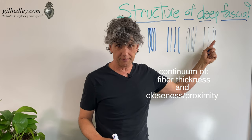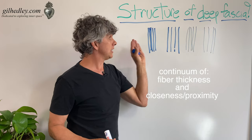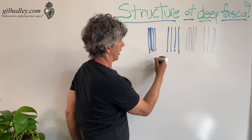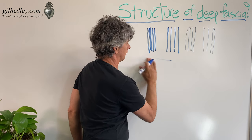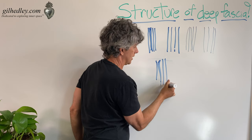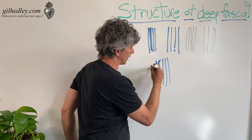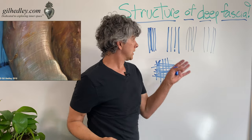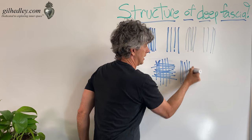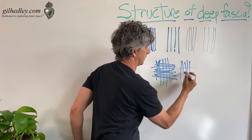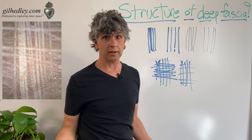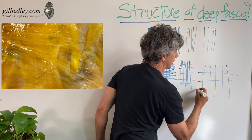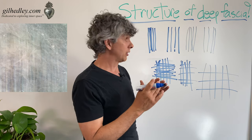We can take these organizations and stack them. We could take dense fibers and cross them with other dense fibers and make a tight grid. We can take dense fibers and cross them with thinner fibers that are more spaciously organized. We can do pretty much any combination of the above — thin fibers spaciously organized, thin fibers more closely organized.